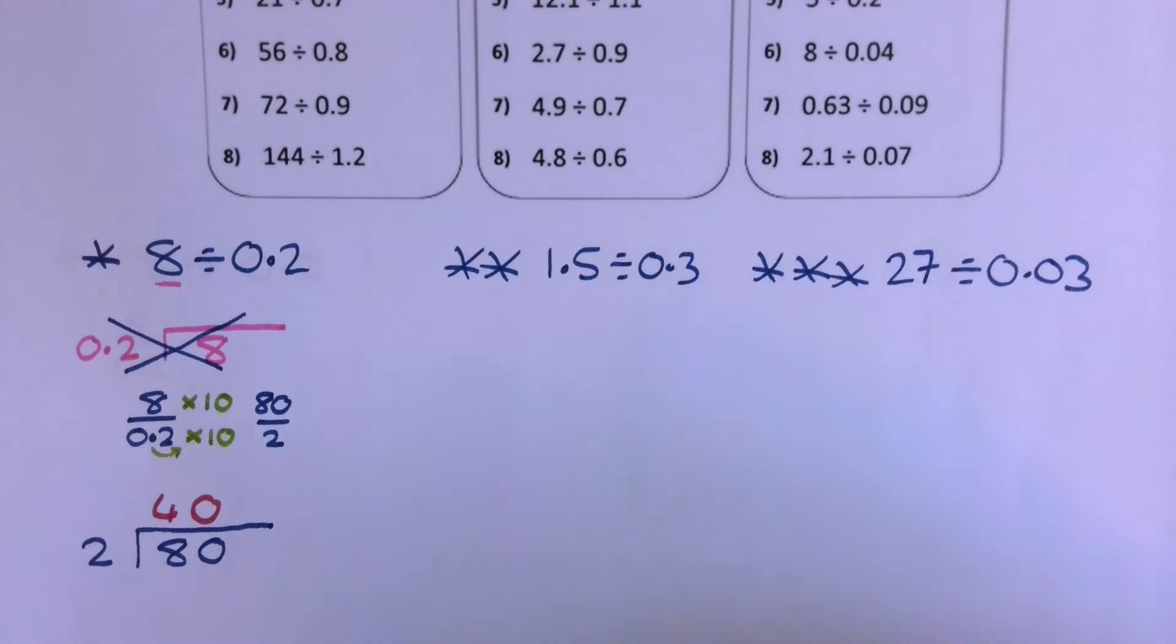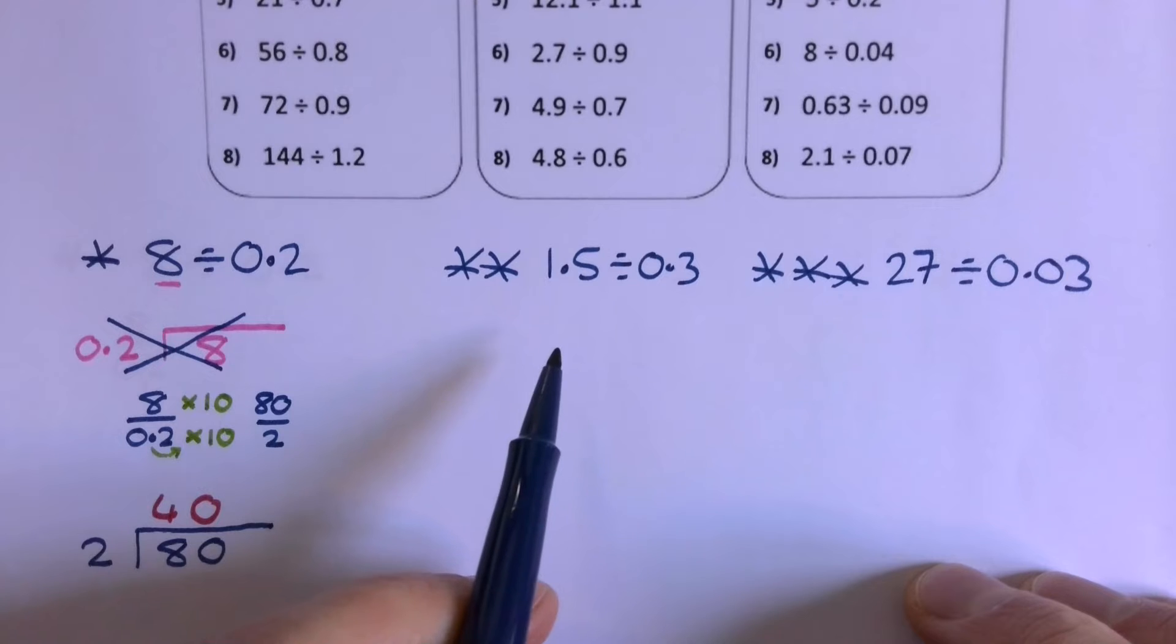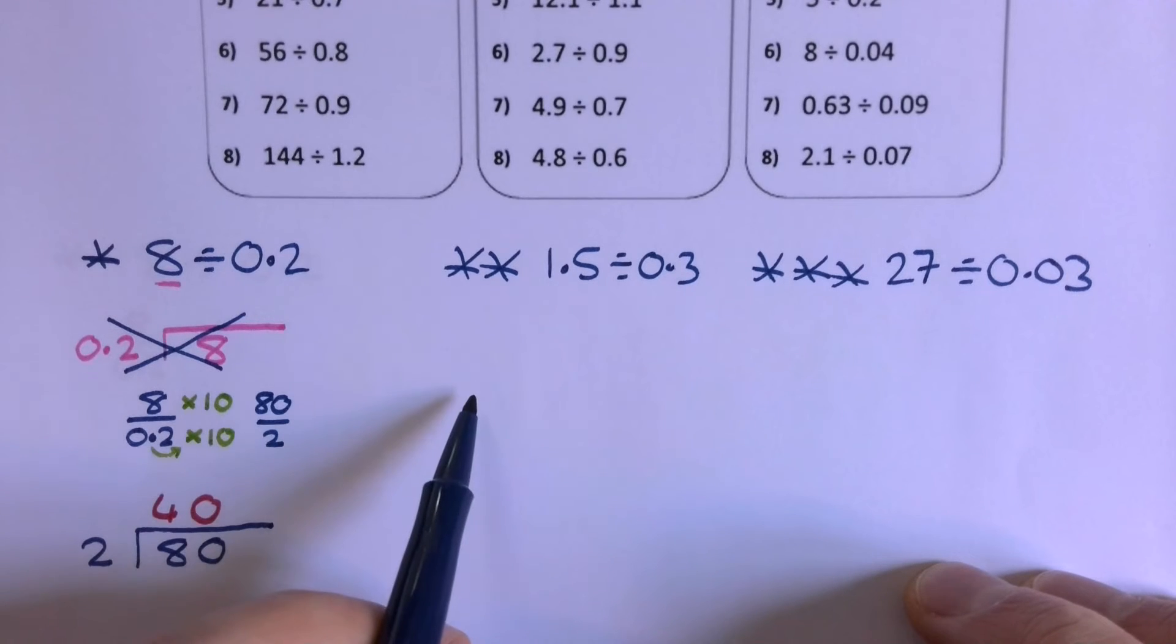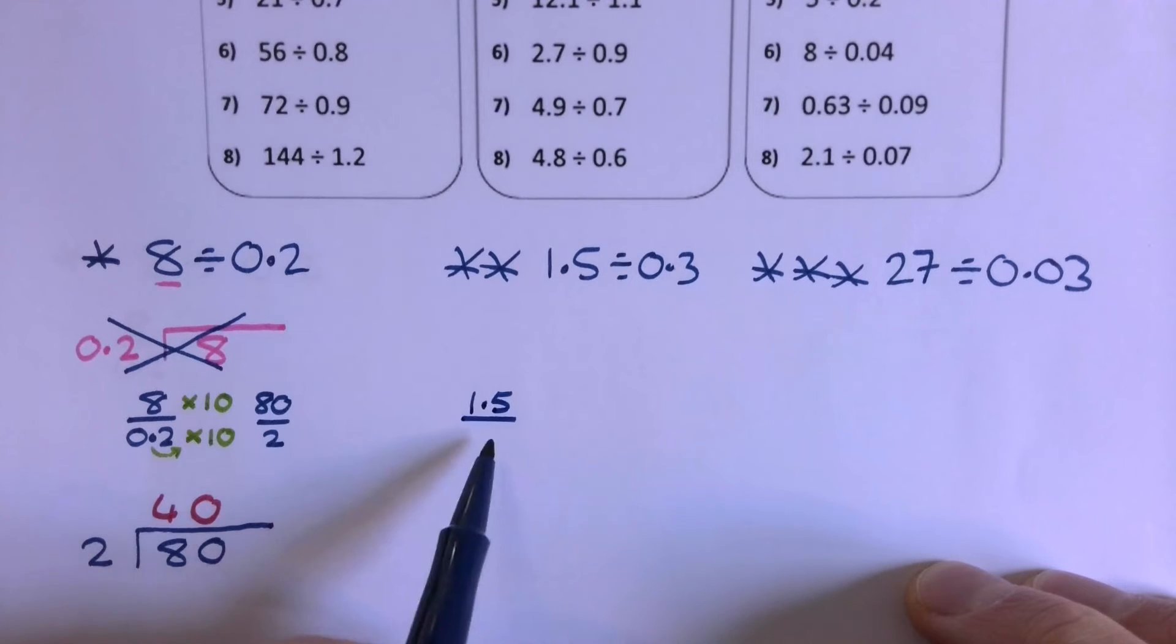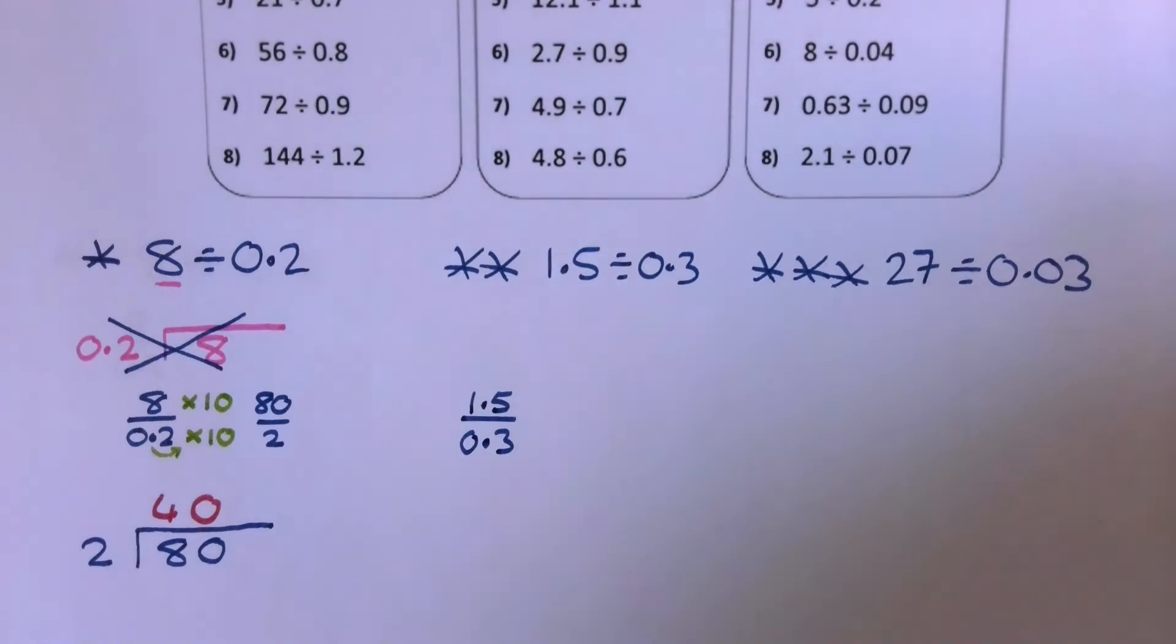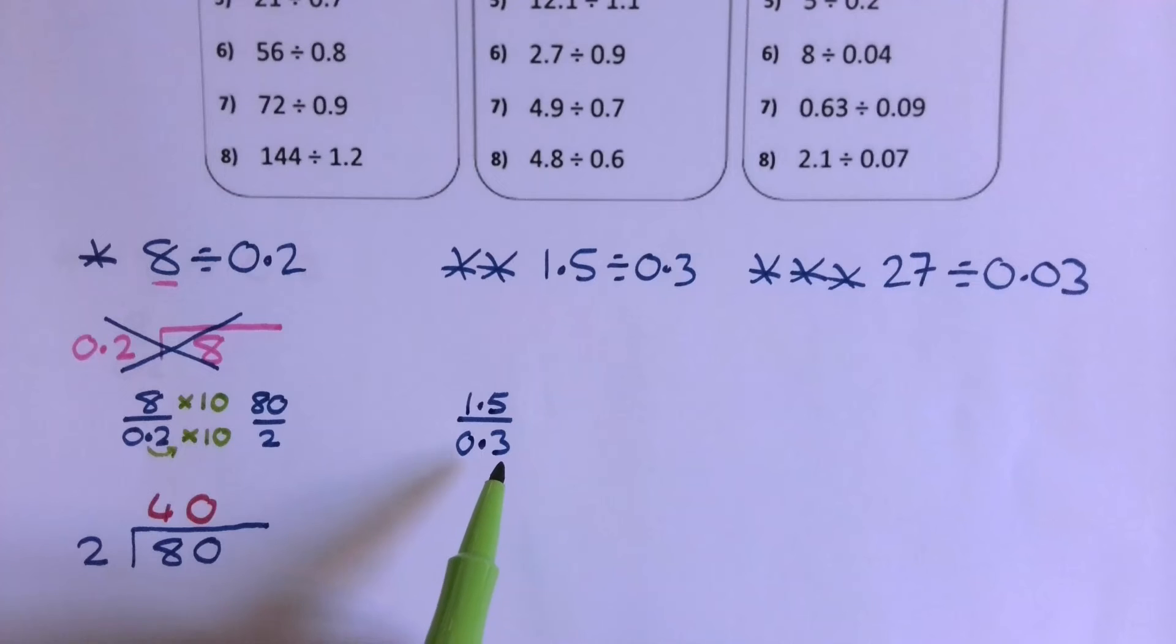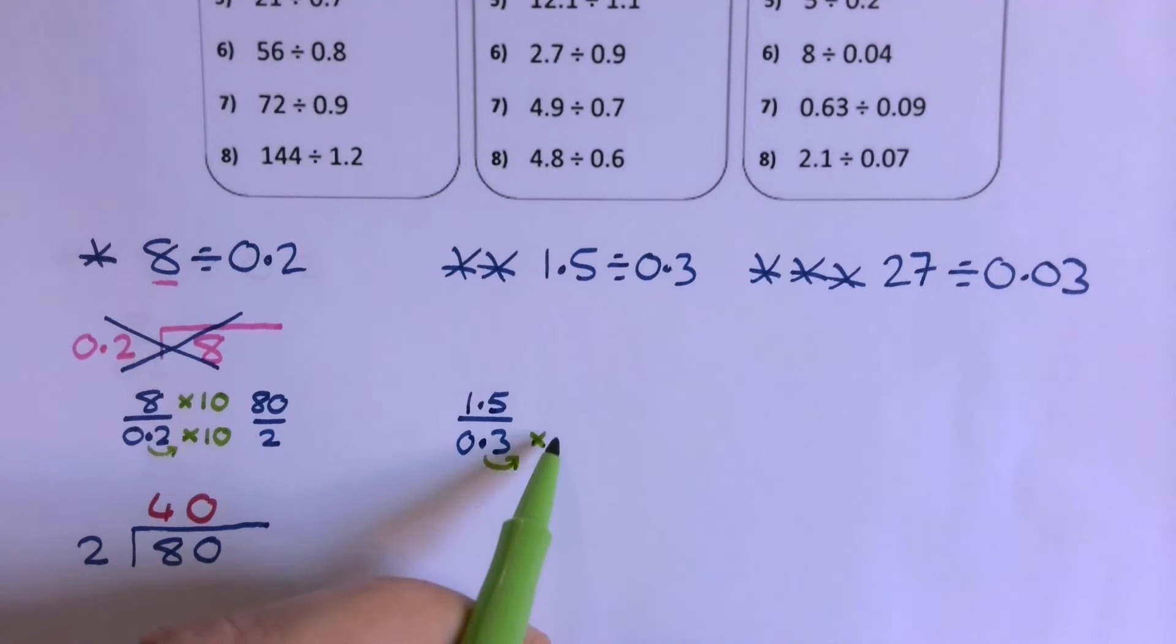So second one then. What we're going to need to do is take the calculation and write it as a fraction. So 1.5, and we're dividing by 0.3. Now, really what I'm interested in is how do I get this denominator, the number that's going to be on the outside of the bus stop, to be a nice number.